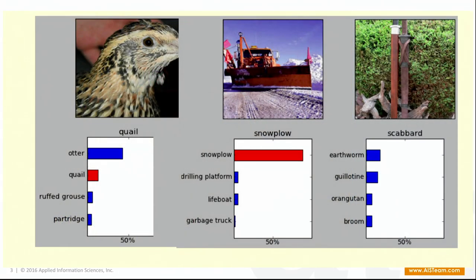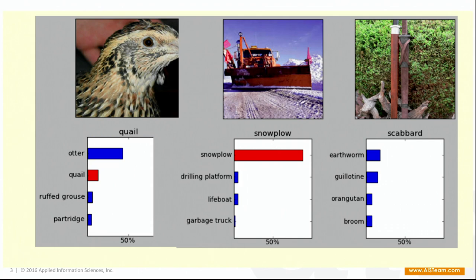Look at these pictures — it's quite fascinating. I couldn't tell you if it was a quail or an otter, frankly, but the algorithm got it right on its second attempt. The algorithm said one image was a snowplow and got it on the first attempt. Look at the other interesting choices — it thought the image could be a drilling platform, a lifeboat, or even a garbage truck. All of those choices make sense to a certain extent, but it got the highest probability correct. It did not get the scabbard right — it thought it was an earthworm or a broom. These things are getting better and better over time.